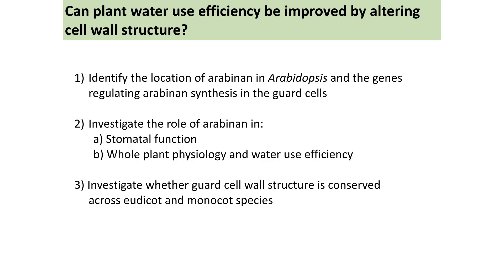This was proposed in 2003 and since then there has been very little work on arabinan, particularly in guard cell walls. We're interested in unpicking the molecular basis behind arabinan synthesis and whether we can alter arabinan structure to alter stomatal movement — but not to the extent of completely locking them shut. In my project I want to identify the location of arabinan within Arabidopsis guard cells, find genes regulating arabinan synthesis, examine its role in stomatal function and whole-plant physiology, and investigate whether guard cell wall features are conserved across eudicot and monocot species.